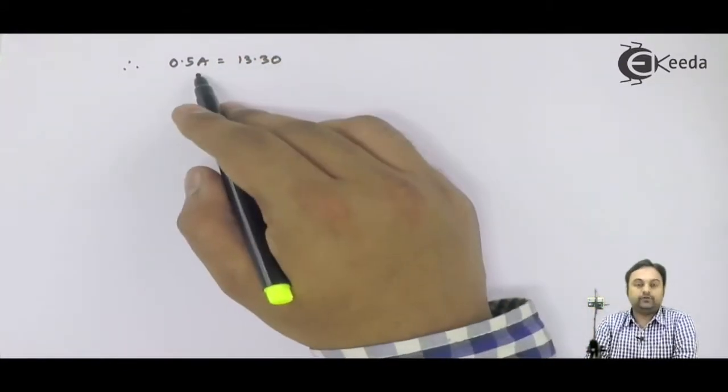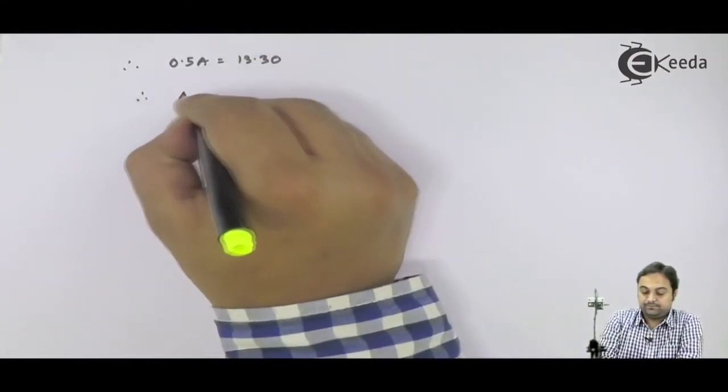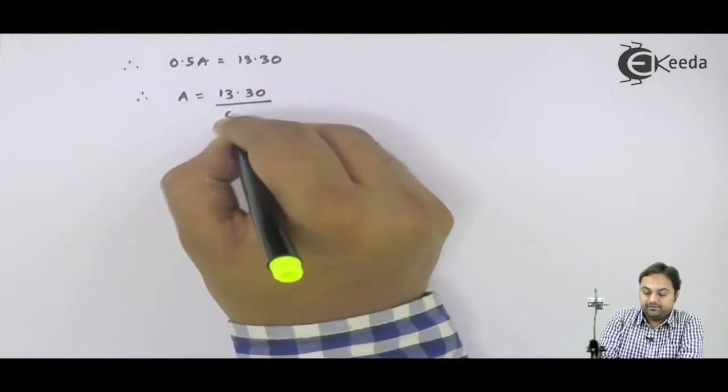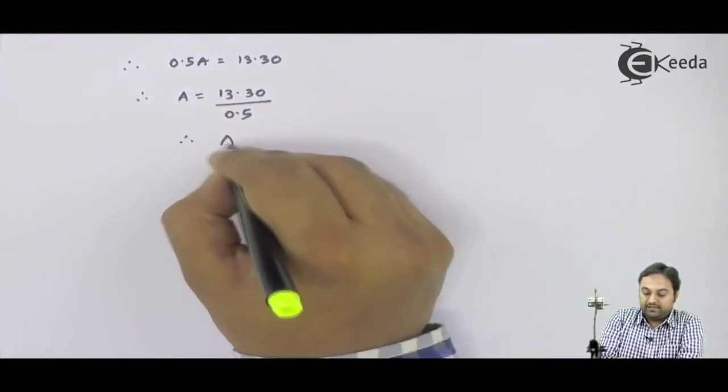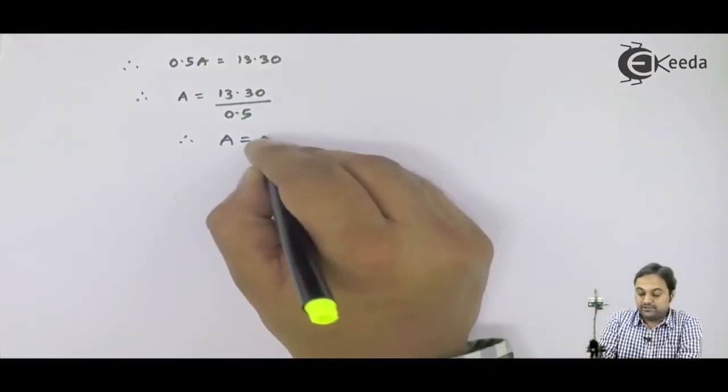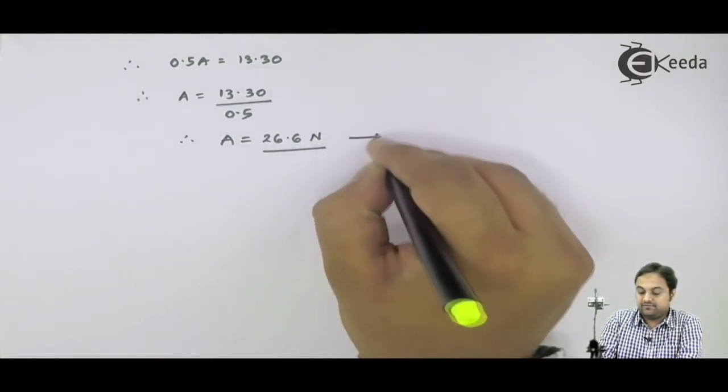It simplifies to therefore 0.5 A is equal to 13.30. Now I need to calculate the value of A. Hence A is equal to 13.30 divided by 0.5 and finally my answer of A that comes out to be 26.6 Newton. This is my first answer.